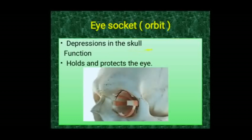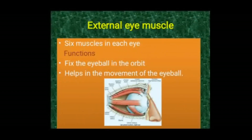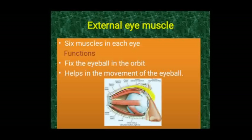Next are the external eye muscles. In the picture you can see certain muscles attached to the eye which hold the eyeball in position and also help in its movement. There are six muscles in each eye. Their major function is to fix the eyeball in the orbit and help in the movement of the eyeball, allowing various eye movements and even eye-based communication.